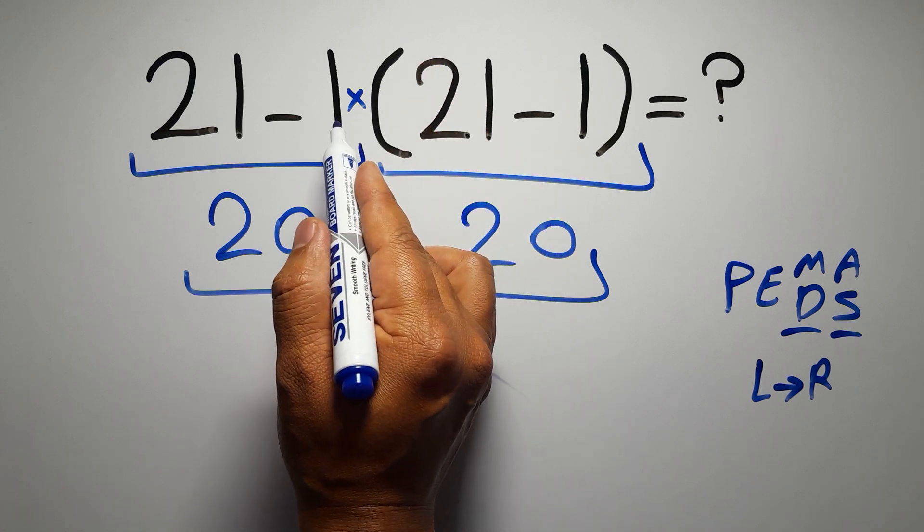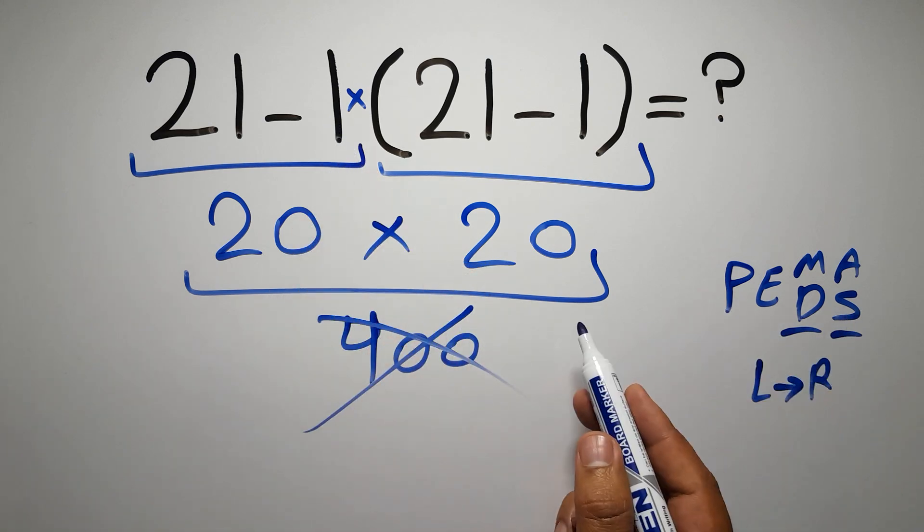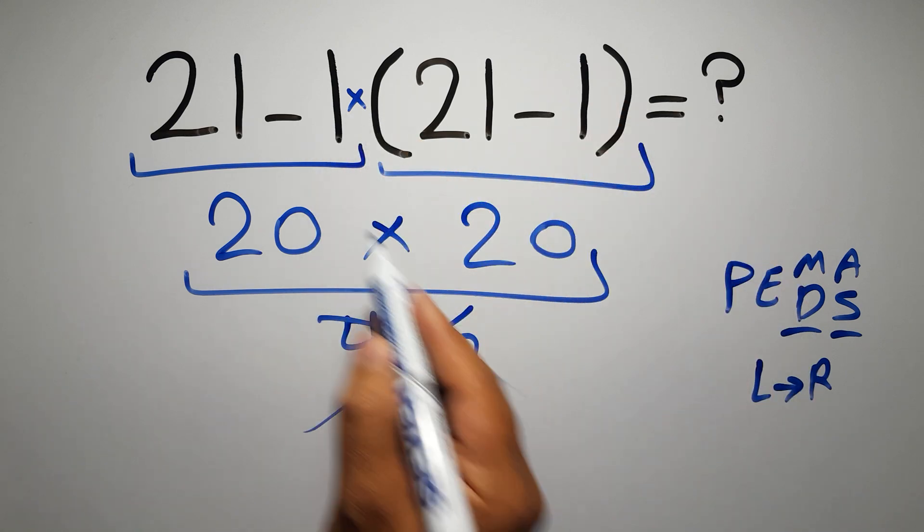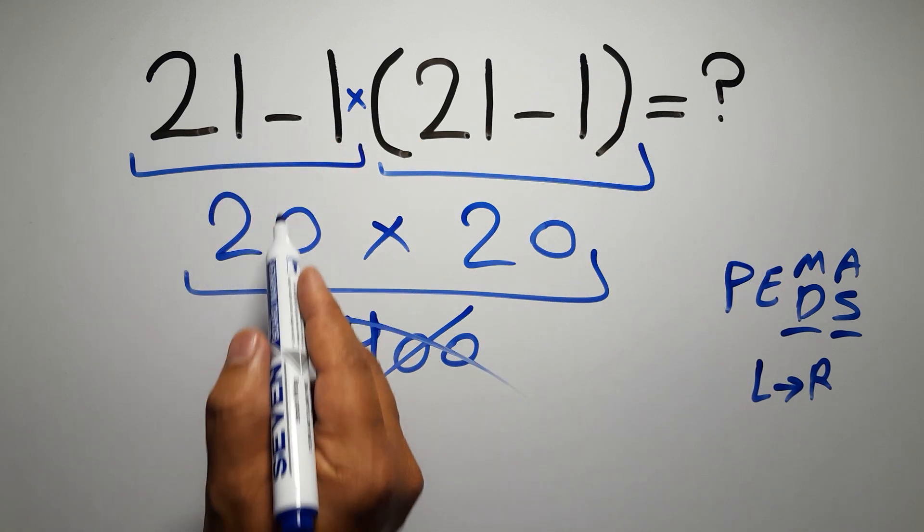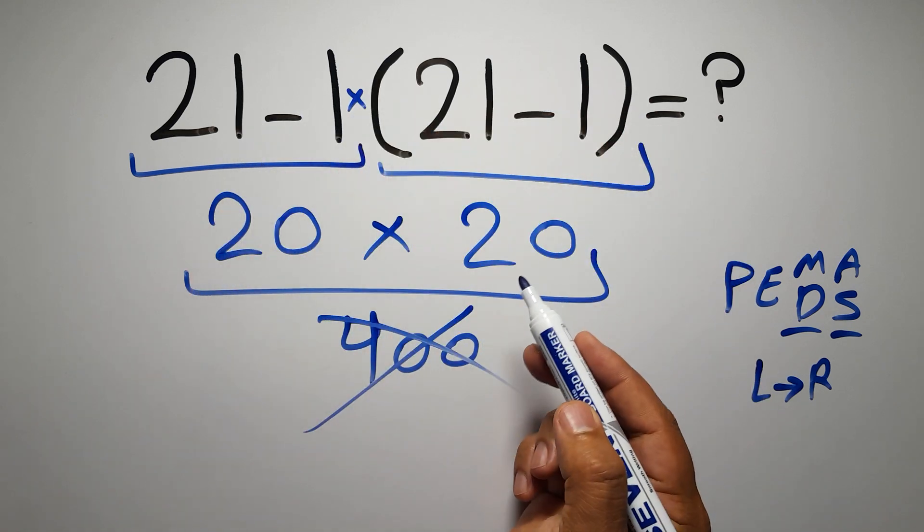So according to PEMDAS, first we have to do this parentheses, then this multiplication, and finally this subtraction. If we do this subtraction before this multiplication or this parentheses, it is wrong.